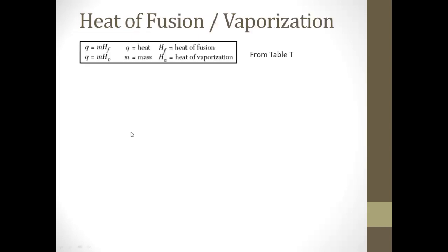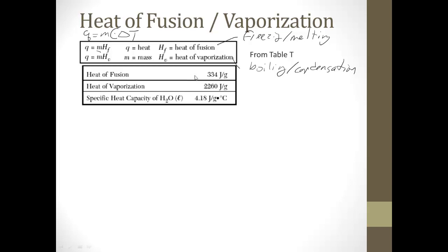All right, like always, there's some math to do. So, there's a couple of things on the reference tables that are important. On table T, where all the formulas are, we already did Q equals MC delta T. Well, there's also Q equals M times the heat of fusion, which is the mass of the substance times the heat of fusion. And Q is the mass of the substance times the heat of vaporization. Heat of fusion is for freezing and melting. Heat of vaporization is for boiling and condensation. And for water, the heat of fusion is 334 joules per gram. The heat of vaporization is 2260 joules per gram.